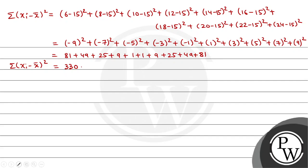So we can write variance equals summation of xi minus x bar whole square divided by n. The xi minus x bar whole square value we found is 330. Total number of observations is 10, so variance is 33.